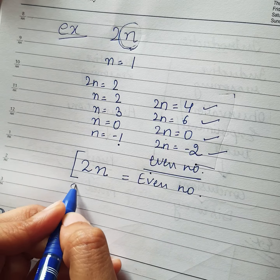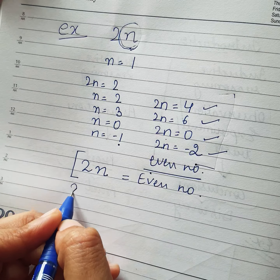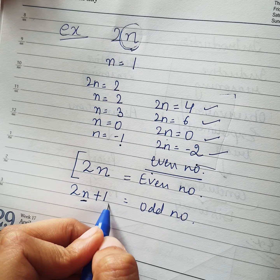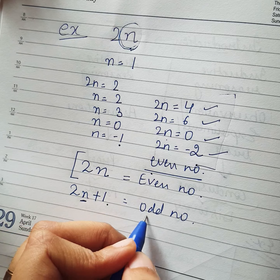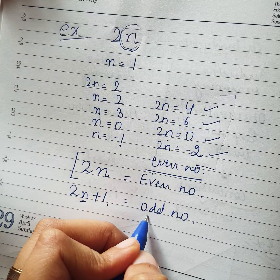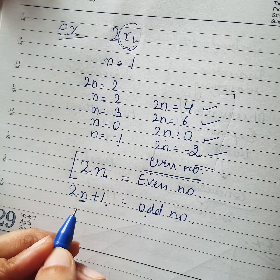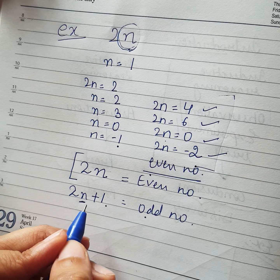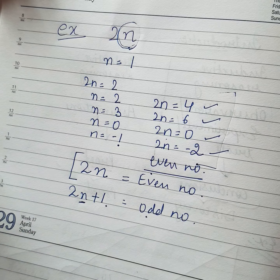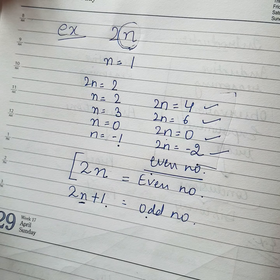Same way, we have 2n+1 for odd numbers. For any value of n you substitute, adding 1 to it, you will always get an odd number. Again, certain experiments are done before proving this.